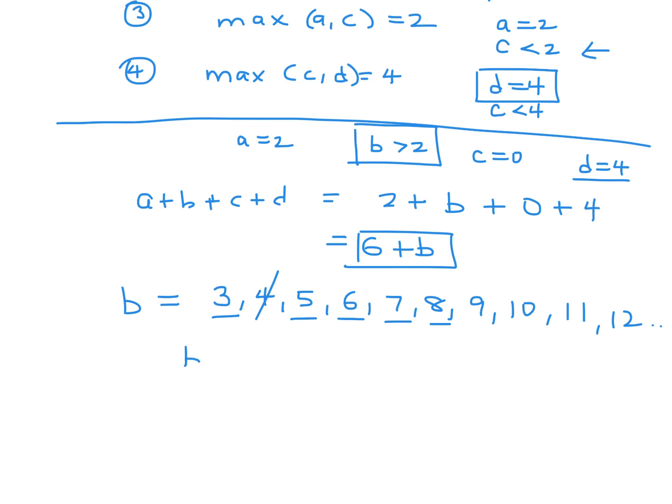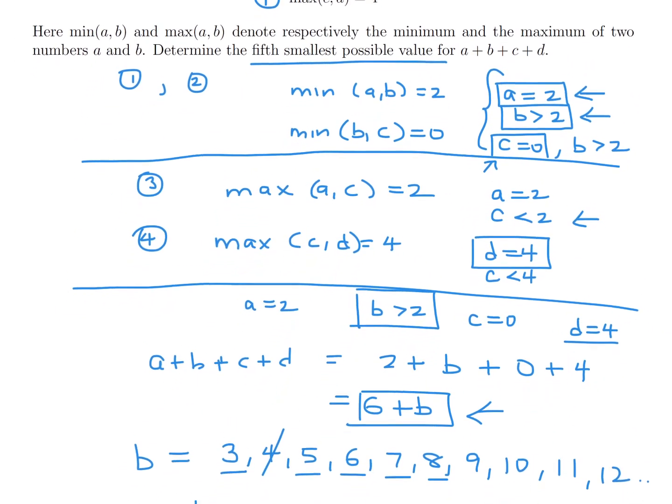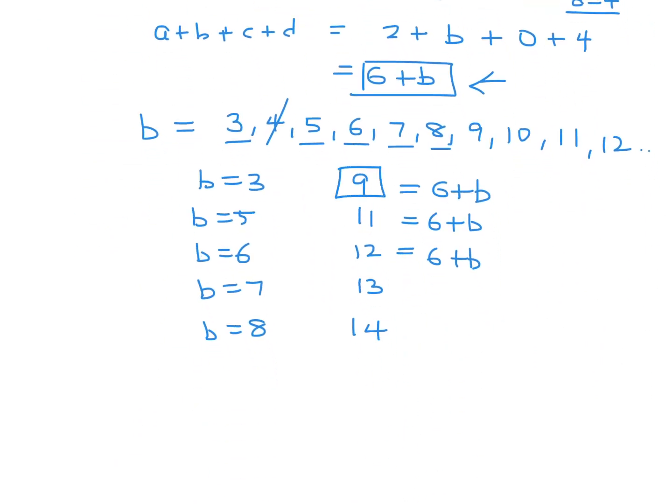When B is 3, this 6 plus B becomes 9. When B is 5, this 6 plus B becomes 11. When B is 6, the 6 plus B is 12. When B is 7, it's 13. When B is 8, it is 14. And what do they want? The fifth smallest possible value. Fifth smallest. Well, this is the smallest. Second smallest, third smallest, fourth smallest, fifth smallest. So I'm pretty sure the wording of the question I understood and therefore the answer would be 14.